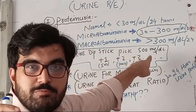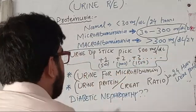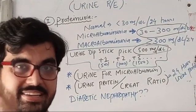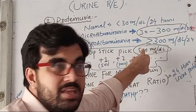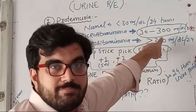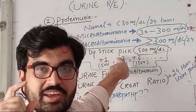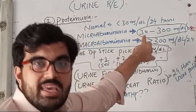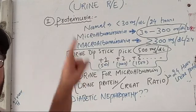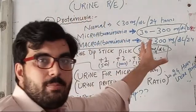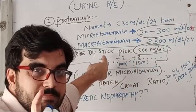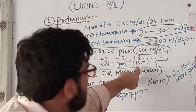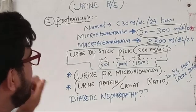The urine dipstick cannot detect less than 500 mg per deciliter, and microalbuminuria is 30 to 300 mg — a lesser amount. So the urine dipstick report may be normal in cases of microalbuminuria, while microscopic damage is already going on. On the dipstick: plus one means 500 mg, plus two means 1000 mg, plus three means 1500 mg. The main problem is it cannot detect microalbuminuria.